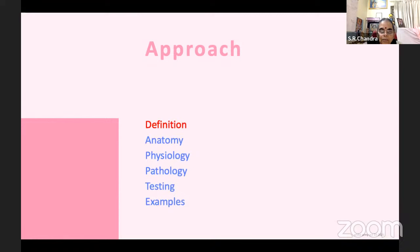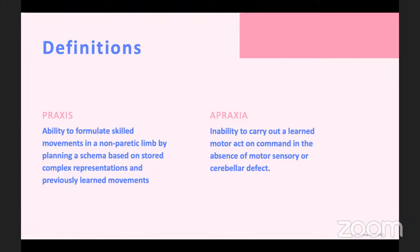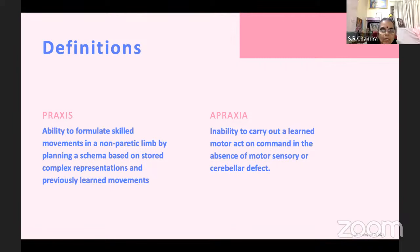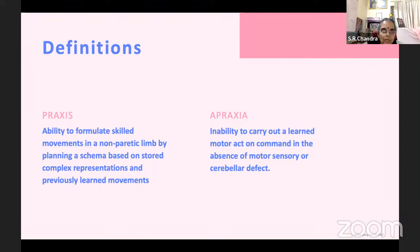Abnormality in the movement system is apraxia, in the absence of paralysis. What is praxis? Praxis is the ability to formulate skilled movements in a non-paretic limb system, by planning a schema based on stored complex representations and previously learned movements. That means you have a schema for all types of movements — sensory triggered, voluntary, and involuntary — which should take place in a particular sequence. These movements happen by a schema, stored as default for involuntary movements, and based on previous experience for learned movements.